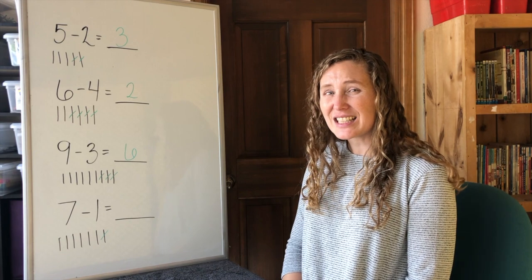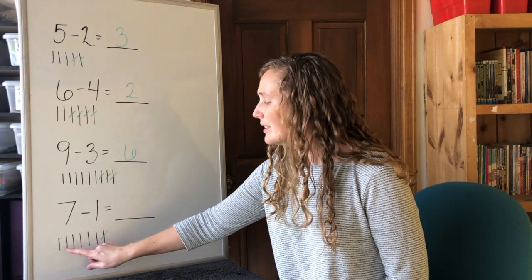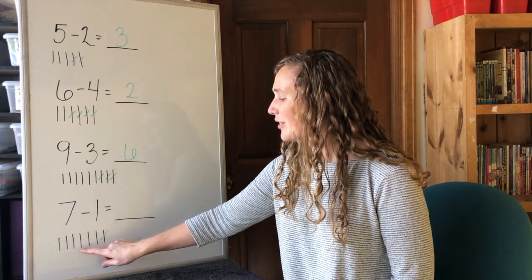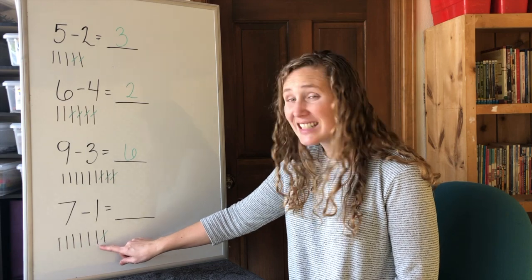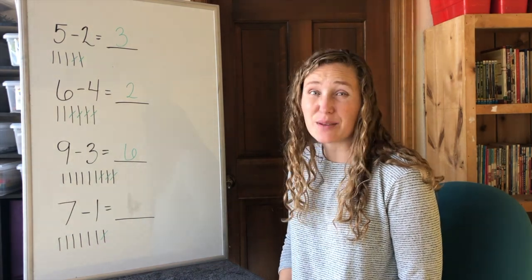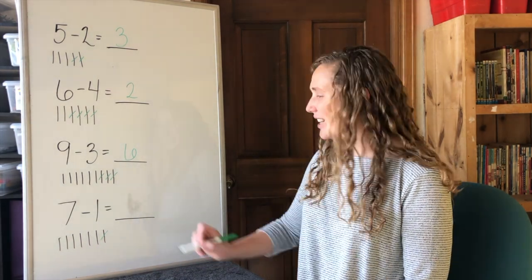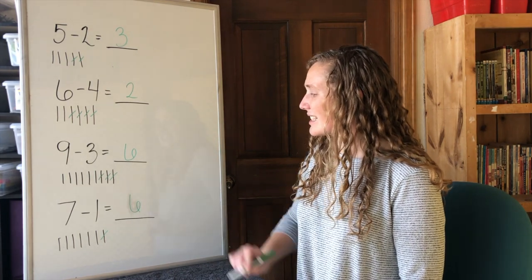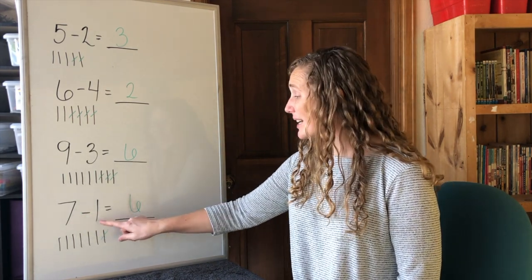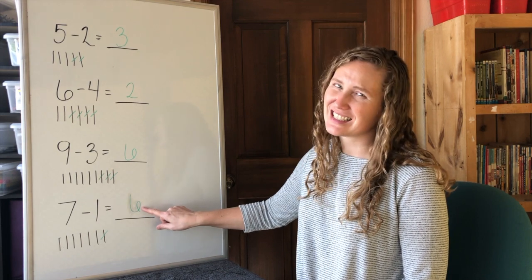And that leaves us with one, two, three, four, five, six. Six tally marks left. Our answer is six. Seven minus one equals six.